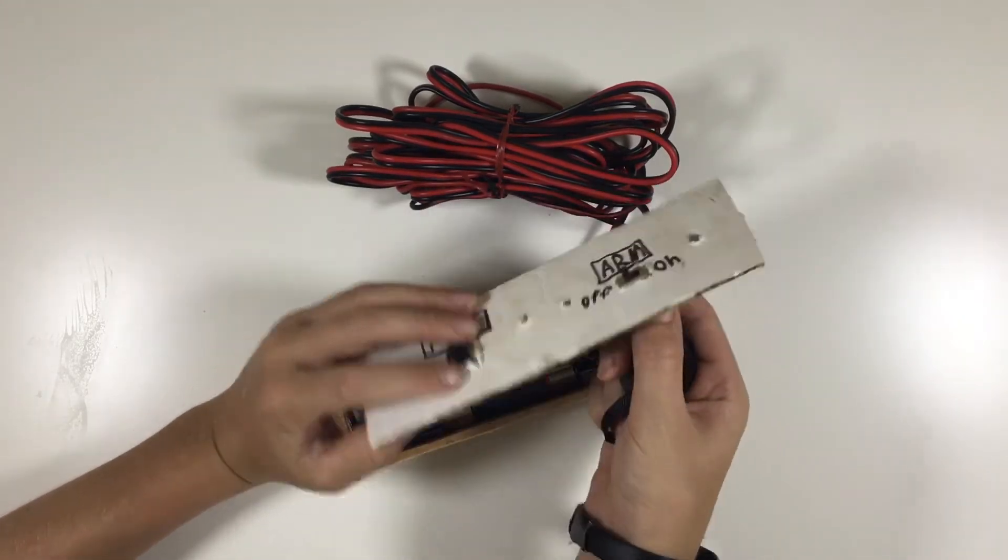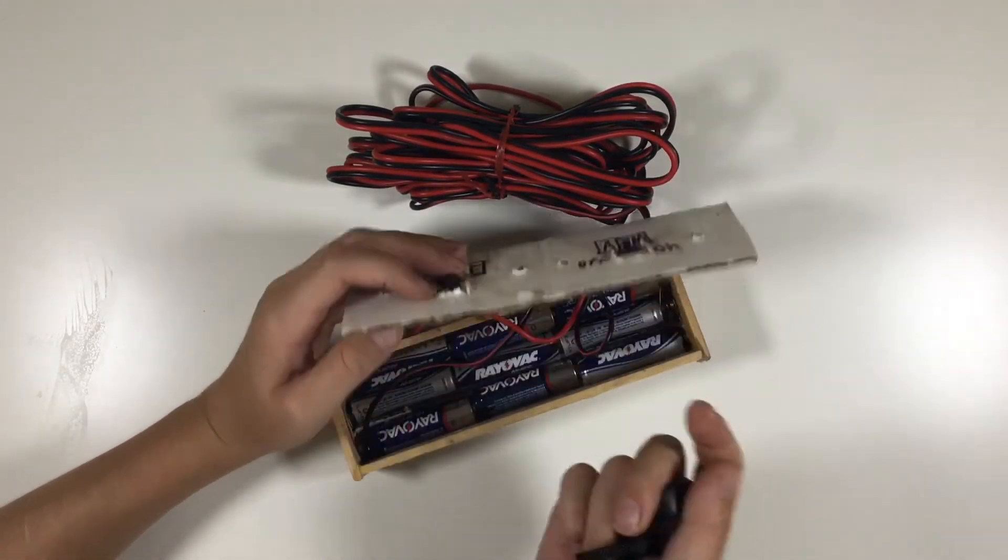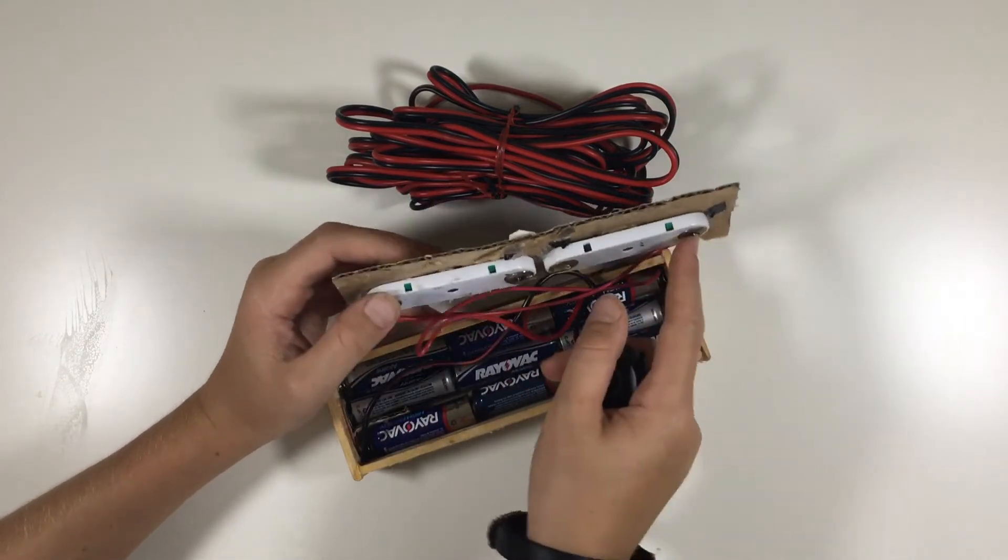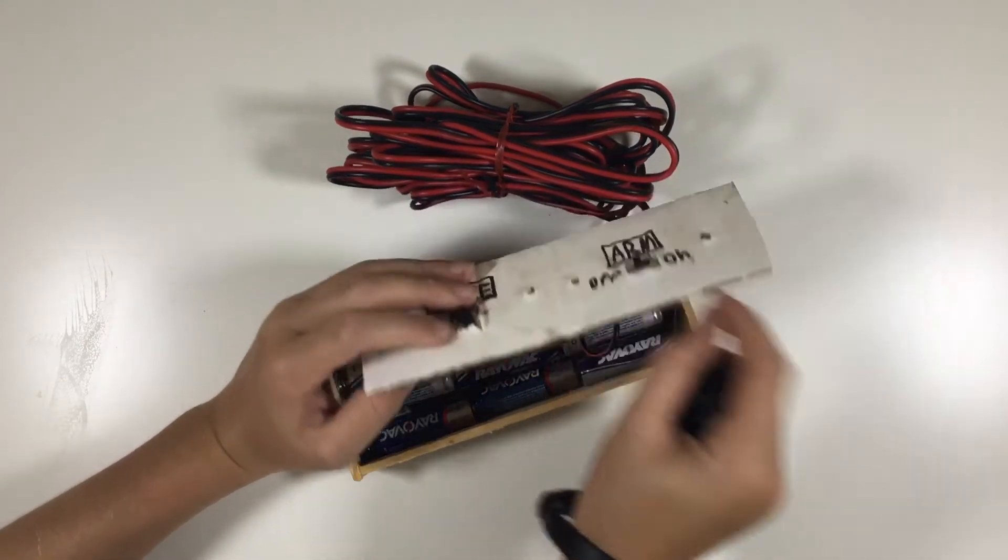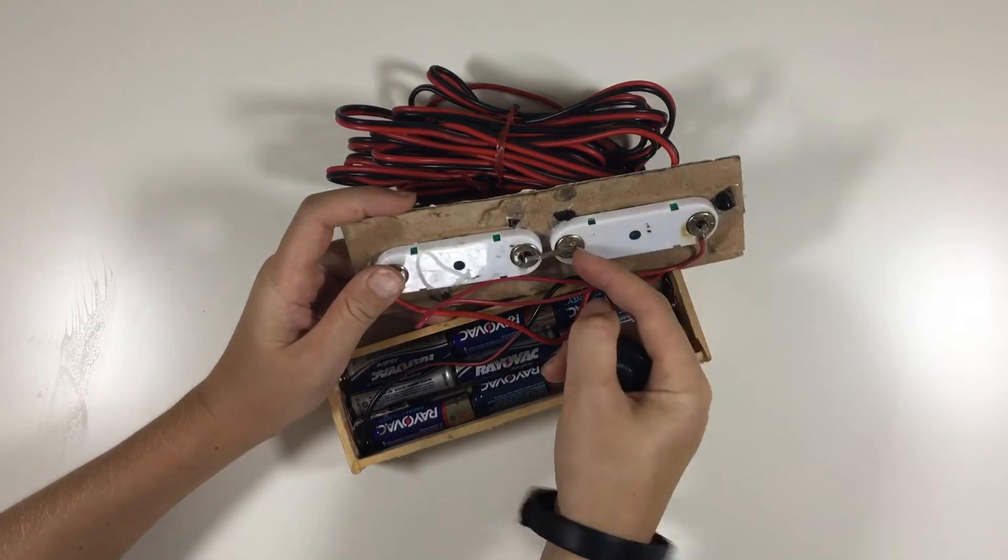From here I used a piece of snap circuits, but if you have a switch at home you can use that too. I soldered that in and then it would go through that. If the switch is on, the power would keep on going.